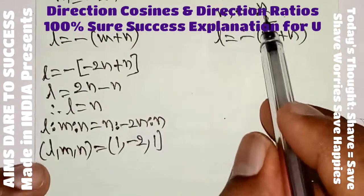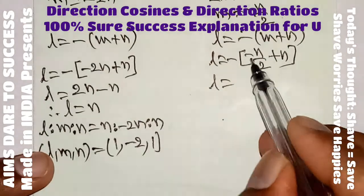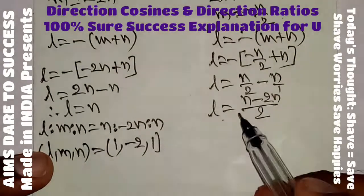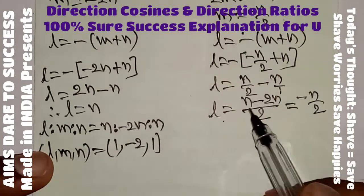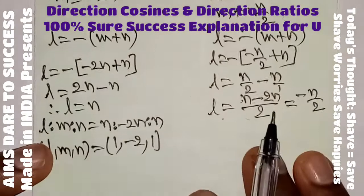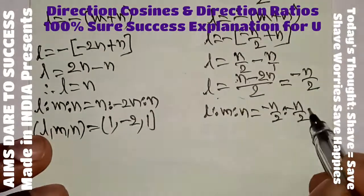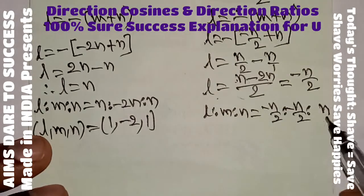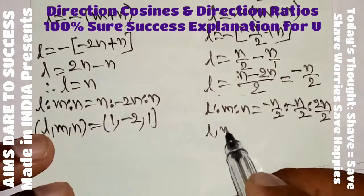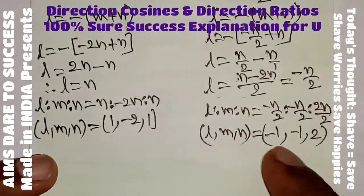Case 2: 2m plus n equals 0, so m equals minus n by 2. Substituting into l equals minus(m plus n): l equals minus(minus n/2 plus n) equals minus(n/2) equals minus n by 2. So l : m : n equals minus n/2 : minus n/2 : n. Multiplying through by 2 and cancelling, the direction ratios are l : m : n equals minus 1 : minus 1 : 2.